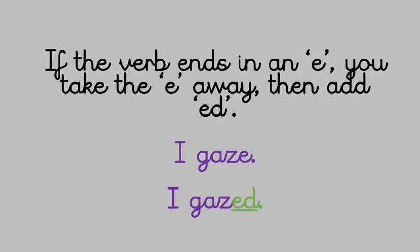Sometimes we can't just add "-ed" to the end of a verb. For example, if the verb ends in an "-e", you need to take the "-e" away and then add "-ed". So "gaze" becomes "gazed" — we've taken off the "-e" before adding our "-ed".